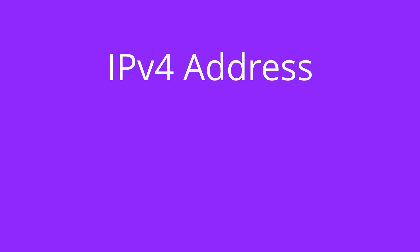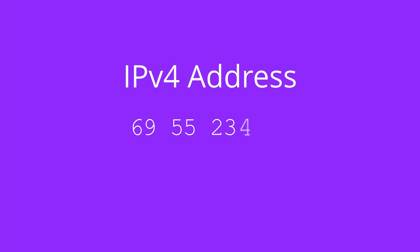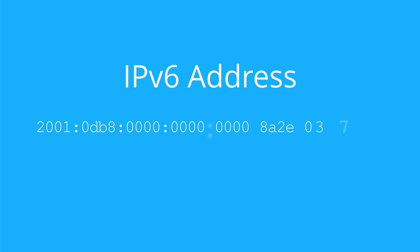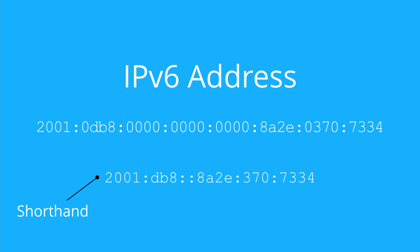An IP version 4 address is made up of 4 digits between 0 and 255 separated by dots, whereas an IP version 6 address is made up of 8 groups of hexadecimal digits separated by colons.